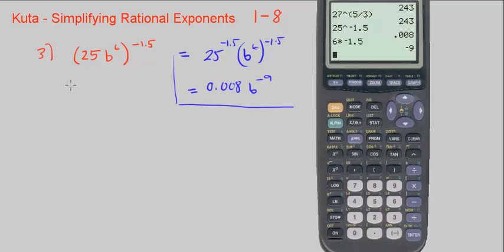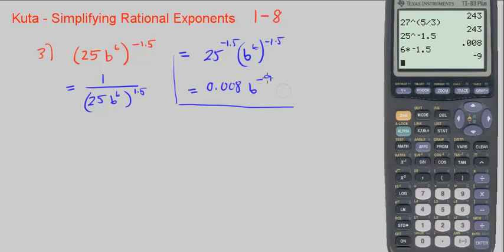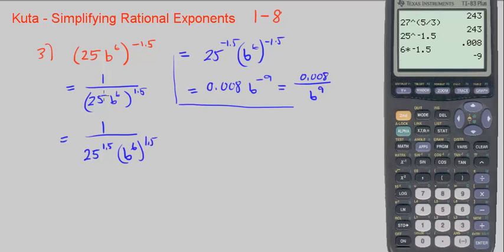We see that the negative exponent can be made positive by writing this as 1 over 25b to the 6th, to the positive 1.5. When we move something from the numerator to the denominator, we just change the sign of the exponent. Similarly, b to the negative 9 can move to the denominator and become positive 9. Going back to this form, we distribute the exponent: 25 to the 1.5 and b to the 6th to the 1.5 — distributing the exponent into the parentheses terms.